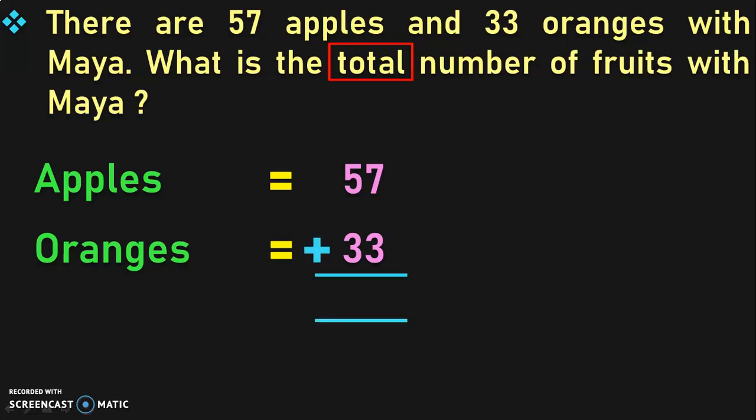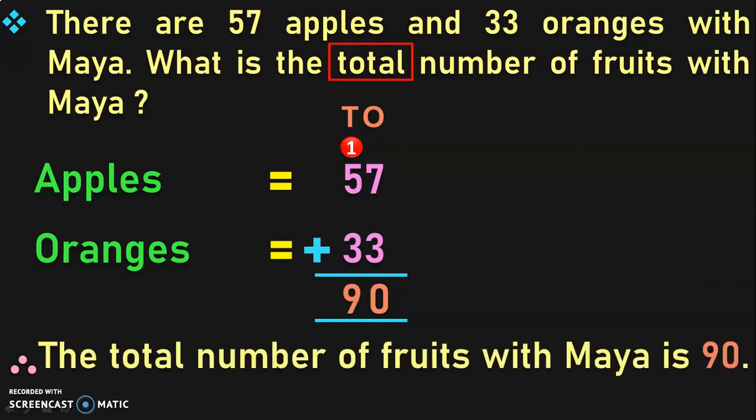Write down the statements: Apples = 57, Oranges = 33. From the keyword, we know we are going to perform addition, so add these two numbers. Write down the place values and begin from the ones place: 7 plus 3 is 10 — write down 0 in the ones place and take 1 as a carryover to the tens place. Then add the tens: 1 plus 5 is 6, and 6 plus 3 is 9. Therefore, the total number of fruits with Maya is 90.